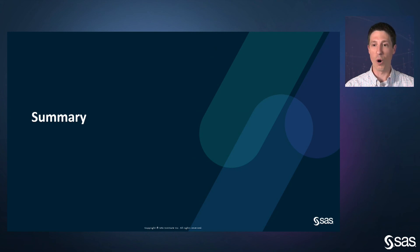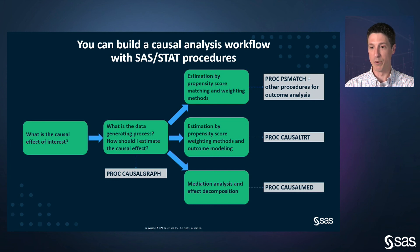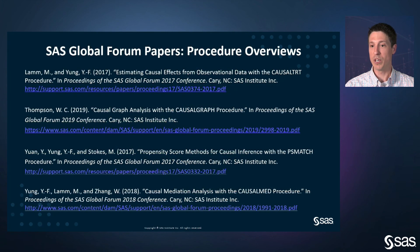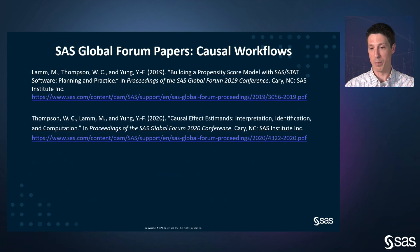This concludes the overview of causal analysis procedures in SAS/STAT software. A causal analysis is a three-part process in which you define the effect of interest, identify that effect from the available data, and then estimate the effect. This process requires clearly articulating your research question and carefully reasoning about the data generating process. The CausalGraph, PS Match, CausalTreat, and CausalMed procedures are designed to fit within this workflow and provide powerful analytic tools to facilitate your causal analysis. For reference, a collection of papers from previous SAS Global Forums provides overviews and more detailed looks at the procedures and practical workflows featured in this presentation.